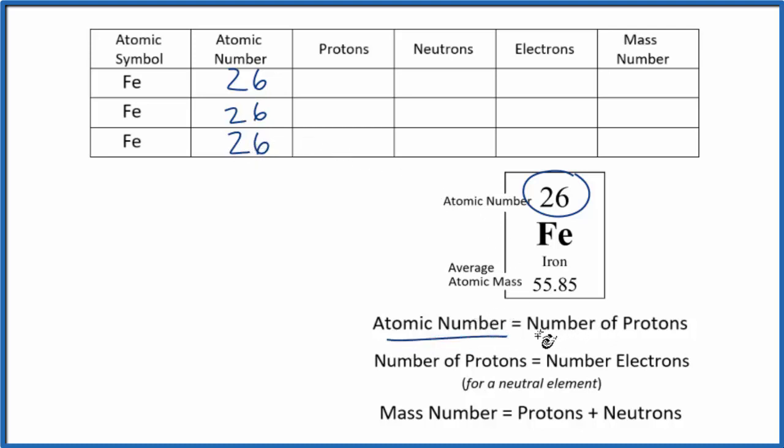The atomic number equals the number of protons. So if we have an atomic number of 26, we have 26 protons.